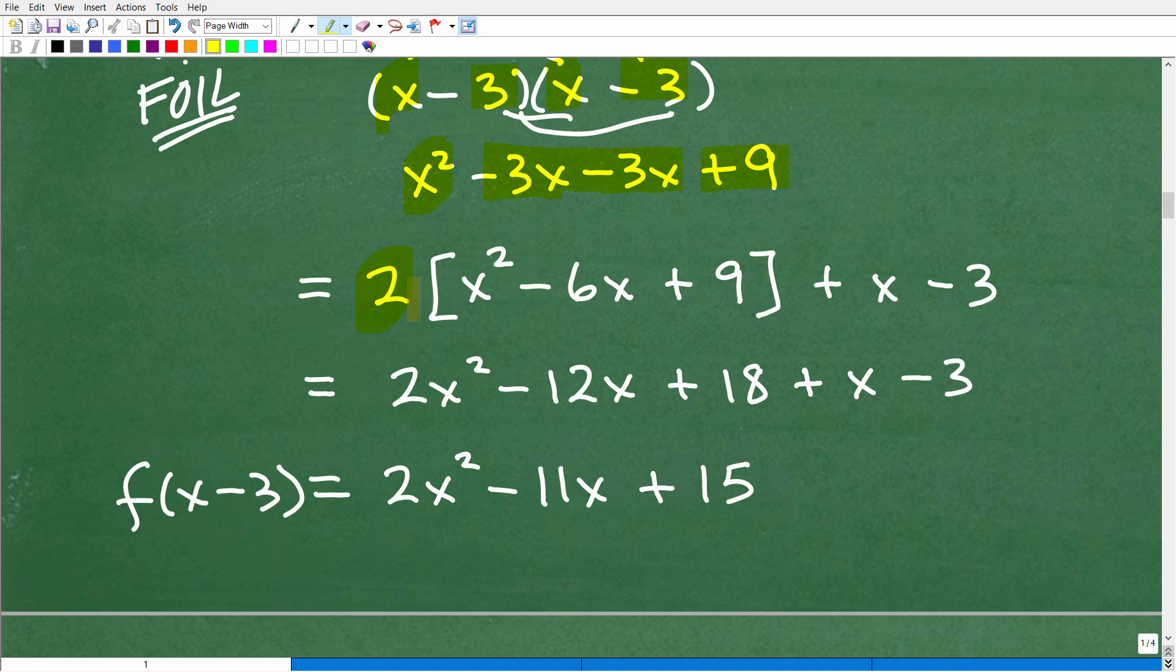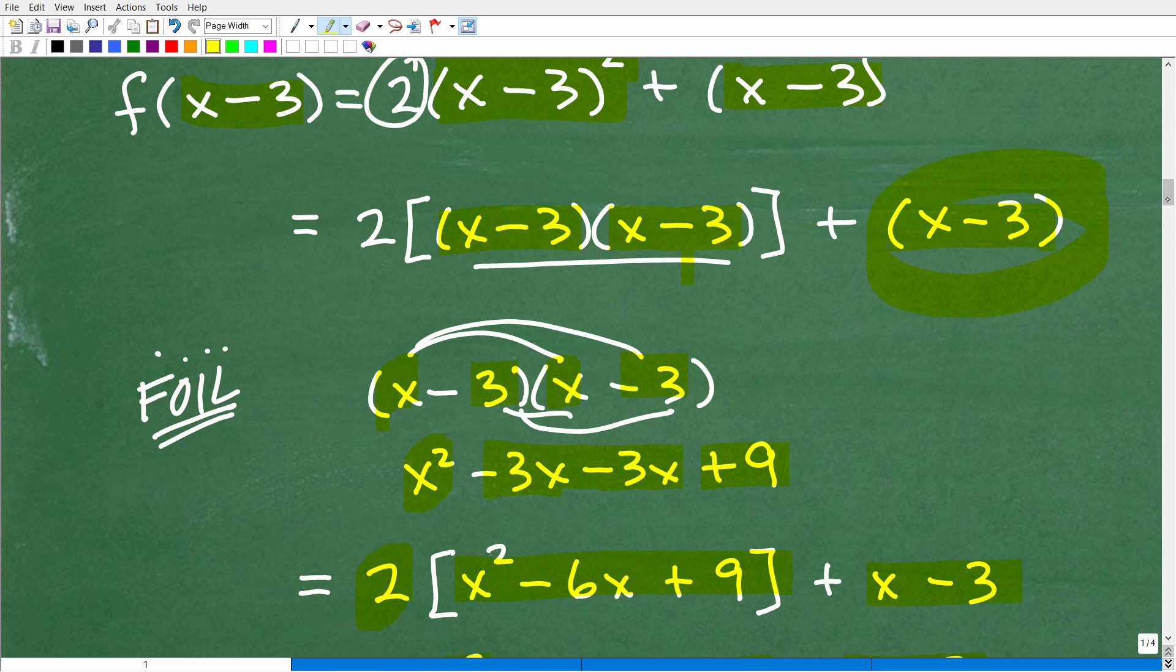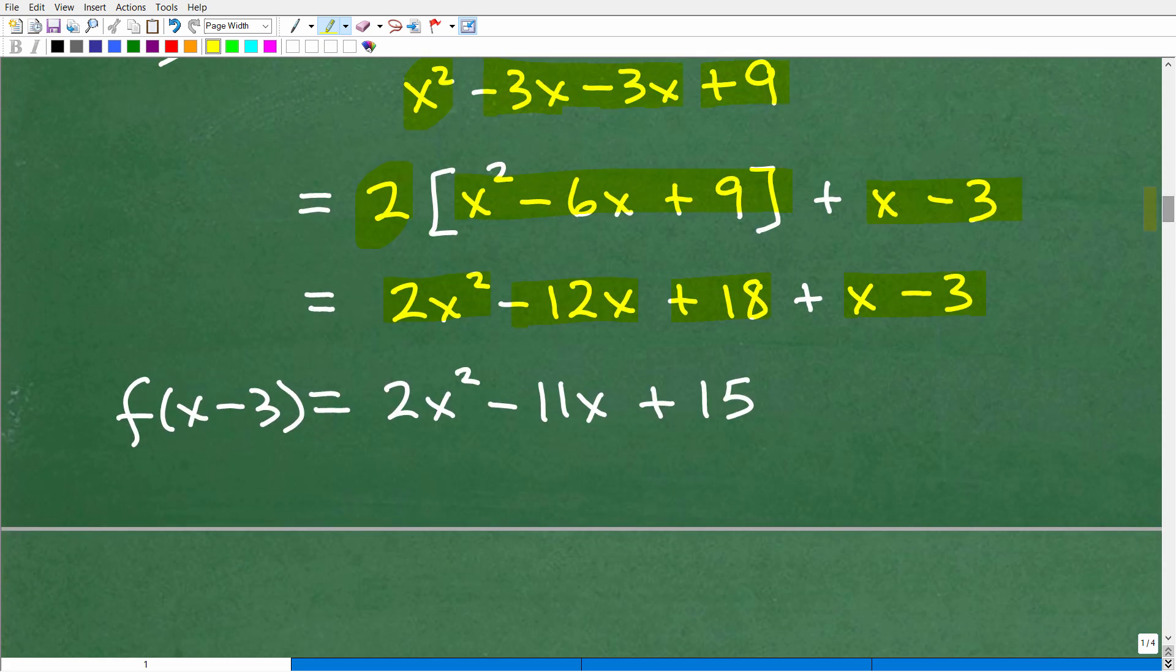All right, so now, remember, I got to now do multiplication. So this is going to be 2 times all of this. So we get 2x squared, 2 times negative 6 is going to be negative 12x, 2 times 9, that's 18. Now I have my x minus 3 over here. We can't forget about that, right? Remember, that's this part of the problem.